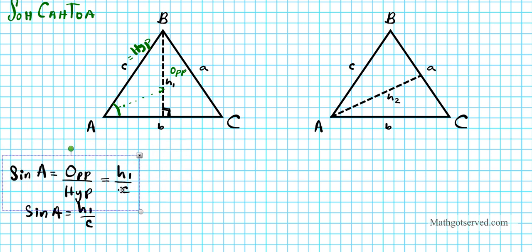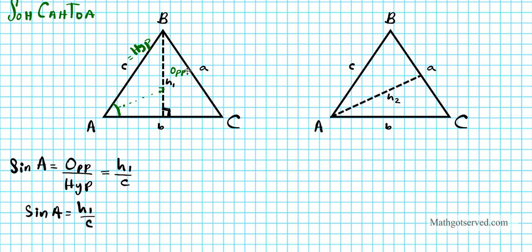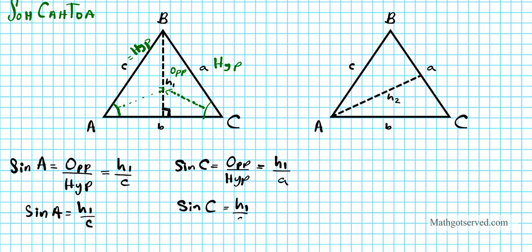Now let's shift attention to the triangle on the other side of h1. Marking angle C as the reference angle in that right triangle, h1 is again the opposite side and a is the hypotenuse, since it's opposite the right angle. So I can write: sine C equals h1 over a.